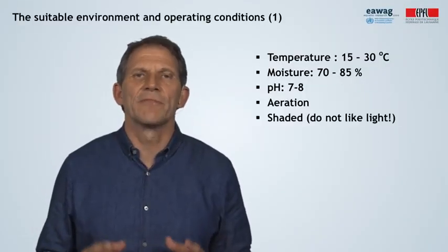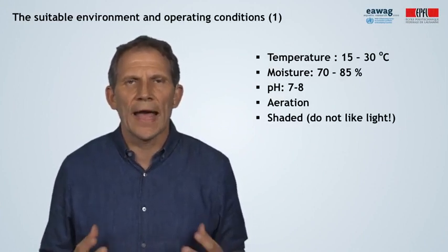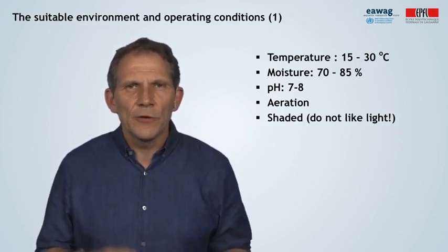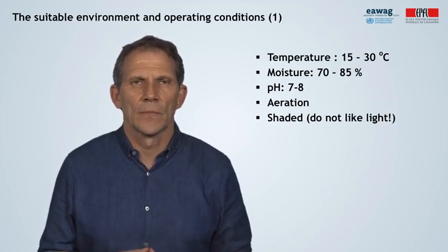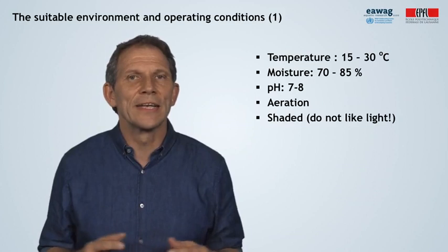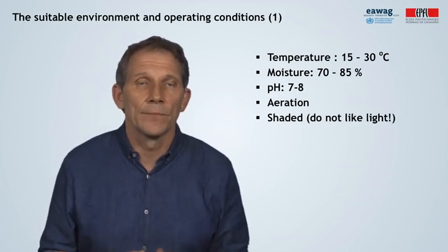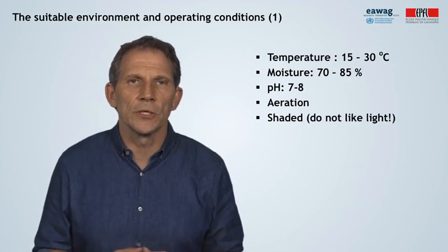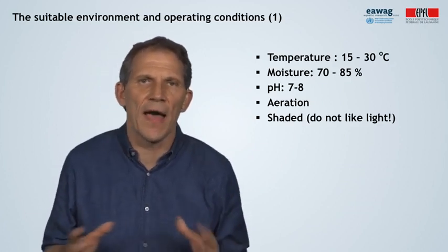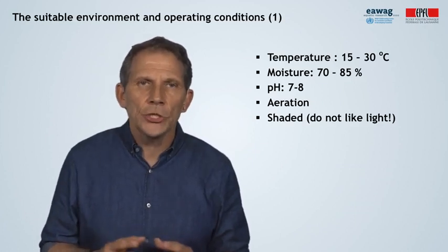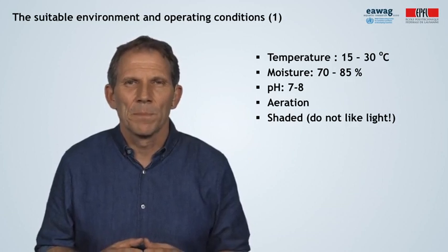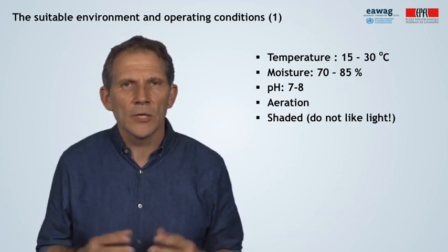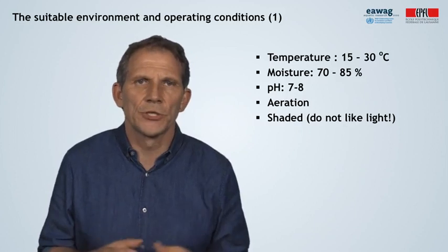Now let us look at the ideal environmental conditions for the worms. Temperature is ideal in the 20s Celsius. Below 15 will slow down their activity. Above 32, the worms will want to leave, and at 35 degrees Celsius they start to die. For hot climates, this means keeping them shaded and moist. Moisture should always be between 70 and 85%, or slightly higher. pH should be neutral or slightly above neutral — pH below 7, so acidic, is harmful to the worms and will also increase the risk of red mites, which are predators of the worms.